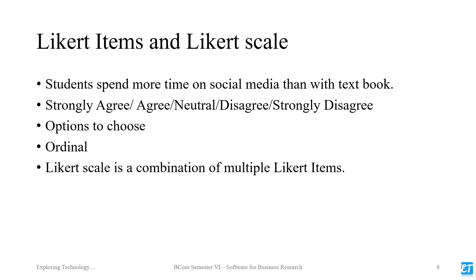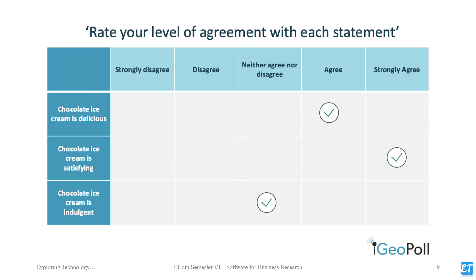A Likert Scale combines multiple Likert items. For example, three items about chocolate ice cream: 'Chocolate ice cream is delicious,' 'Chocolate ice cream is satisfying,' and 'Chocolate ice cream is indulgent.' Each is a Likert item with options from strongly agree to strongly disagree. This combination of three items is the Likert Scale.